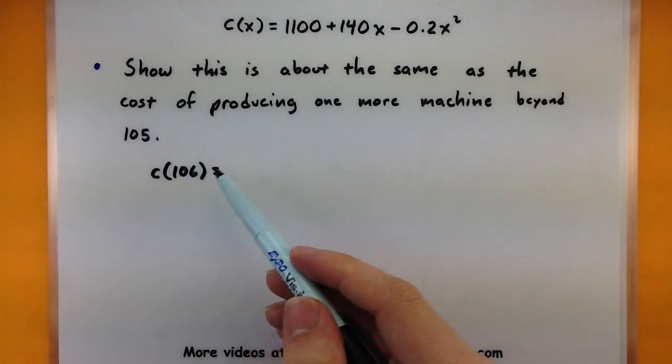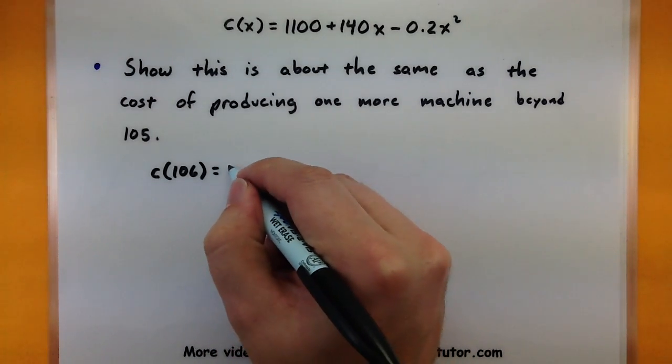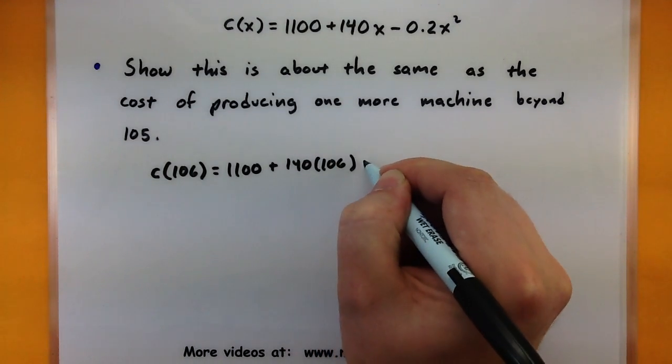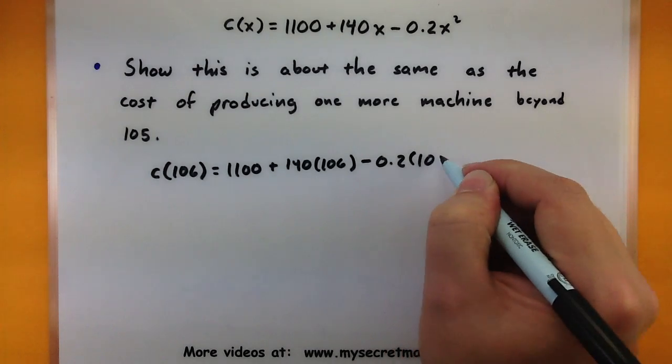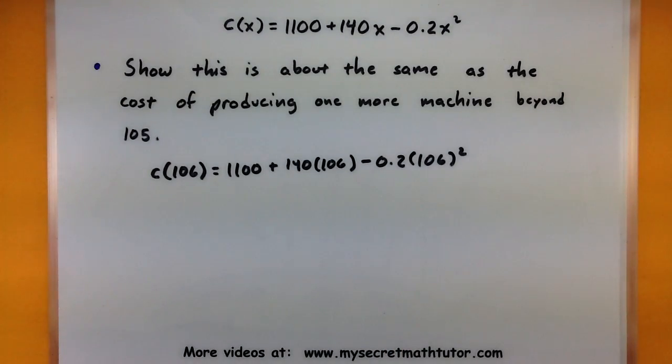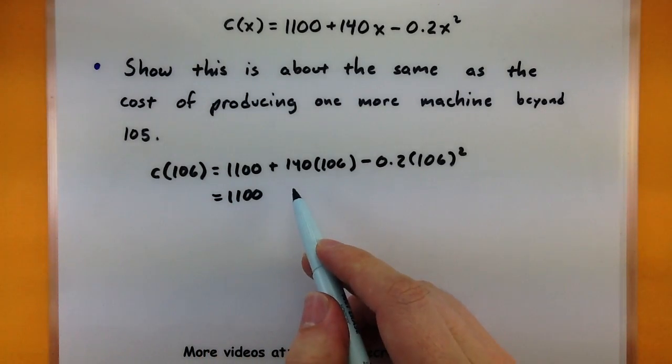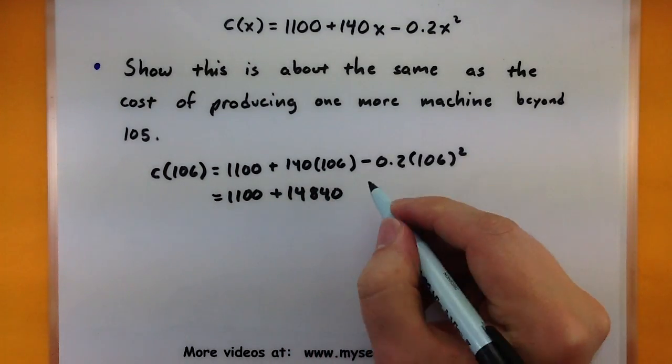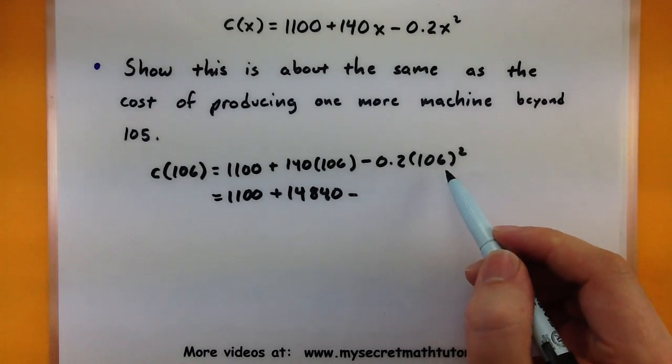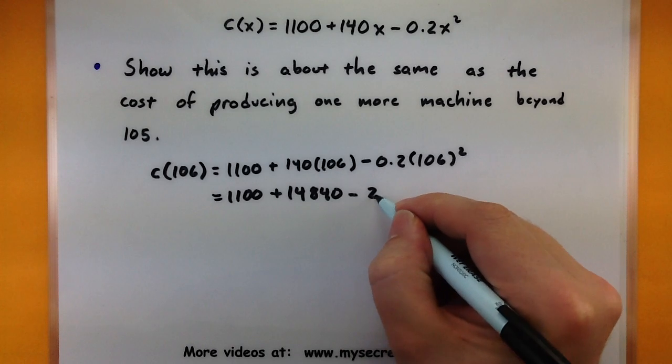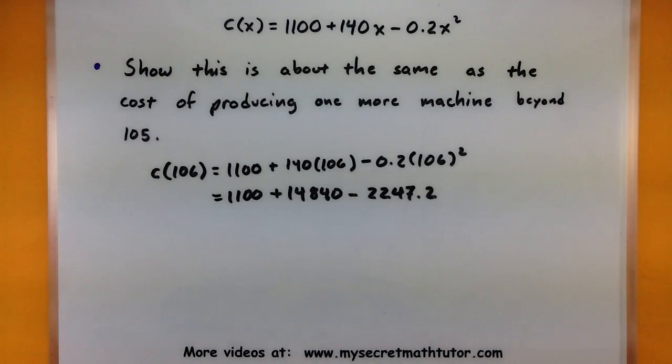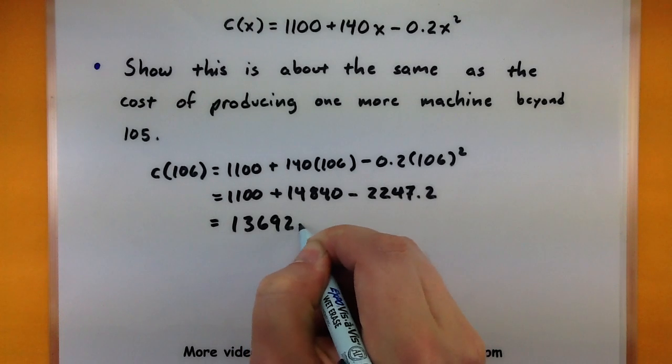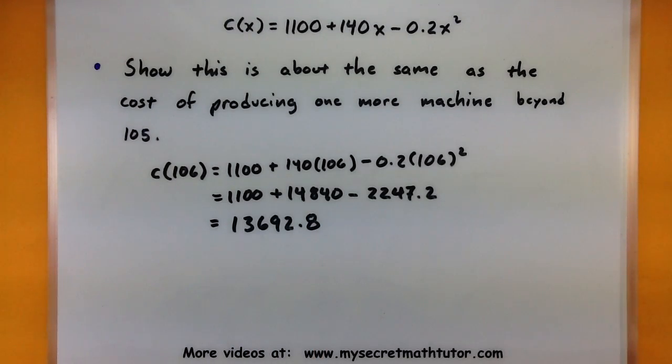Well to find that, I could just take the 106 and plug it into the cost function itself. So I got 1100 plus 140 times 106 minus 0.2 times 106 squared. Some big numbers in here. 140 times 106, I get 14,840 minus, then taking 106 squared and multiplying by 0.2, this is 2247.2. Combining all of these together, we get 13,692.8.